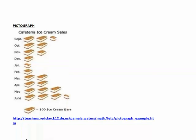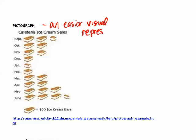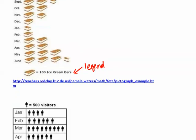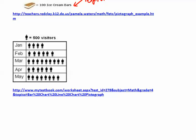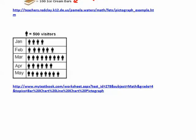The next type is the pictograph, which is just an easier visual representation of a bar graph. Someone might want to use it to grab the reader's attention — you might see it a lot in magazines and websites when you want people to look at information very quickly. The most important thing in a pictograph is a legend that tells you how many each symbol is worth. For example, each ice cream bar symbol might represent 100 ice cream bars, or one person icon might represent 500 visitors.